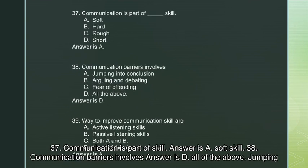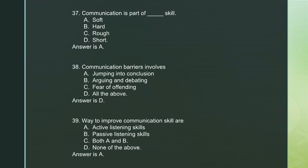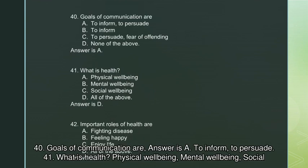Question 37: Communication is part of soft skills. Question 38: Communication barriers involve all of the above — jumping to conclusions, arguing and debating, fear of offending — answer is D. Question 39: Ways to improve communication skills — active listening skills. Question 40: Goals of communication — answer is A: to inform and to persuade.